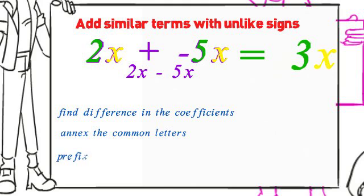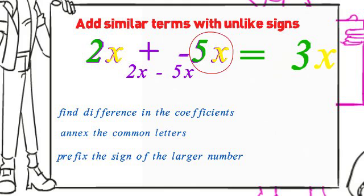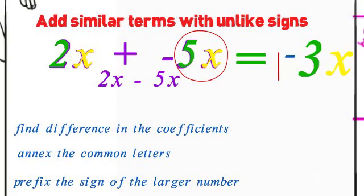Now, the last thing you do is prefix the sign of the largest number. The larger number is 5 and the sign is negative. So, the final answer will be negative. The final answer is, therefore, negative 3x.